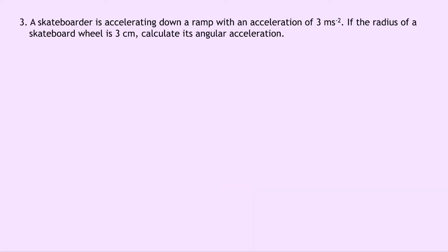Question 3 says that a skateboarder is accelerating down a ramp with an acceleration of 3 meters per second squared. If the radius of a skateboard wheel is 3 centimeters, calculate its angular acceleration. Well, writing down what we know from the question, we're trying to find the angular acceleration alpha. The tangential acceleration a_t is 3 meters per second squared, and the radius is 3 centimeters. So notice we'll need to convert the centimeters into meters, so this becomes 0.03 meters.